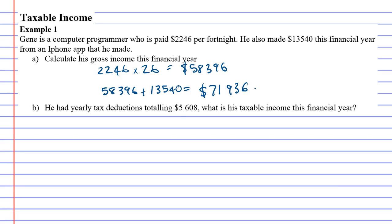Gene had yearly tax deductions totaling $5,608, so what is his taxable income for this year? So all we do is we take our gross income, which is $71,936, that's the amount of income Gene earned, and we're going to take away the tax deductions.